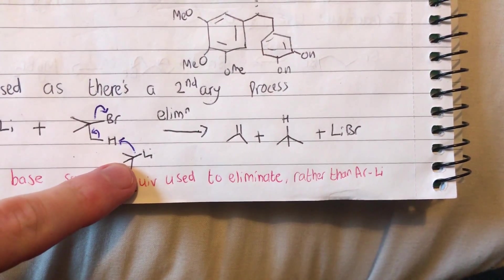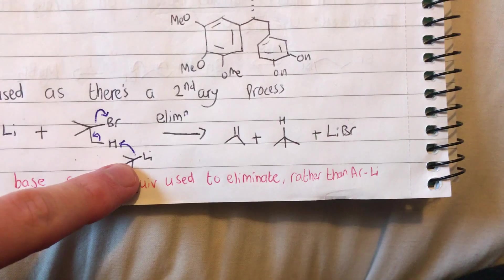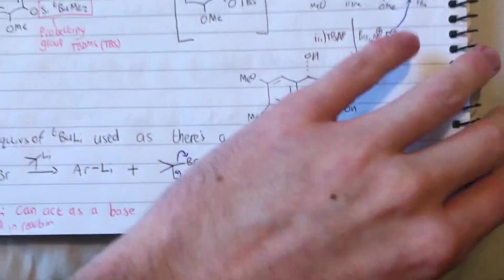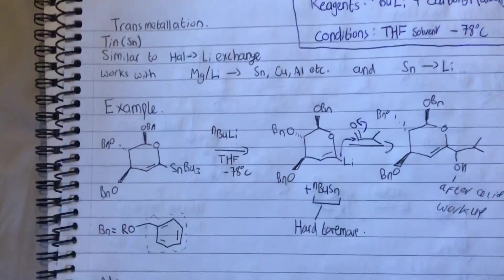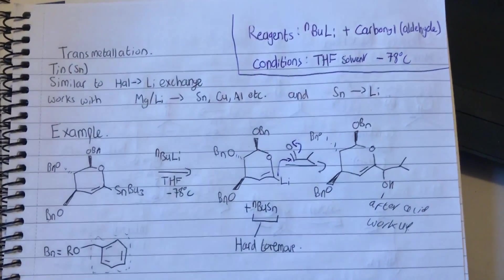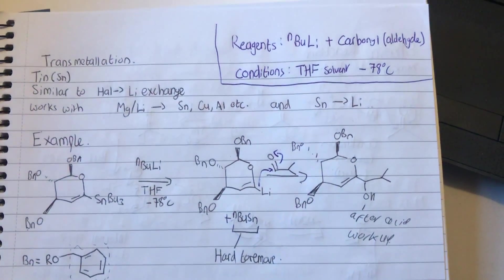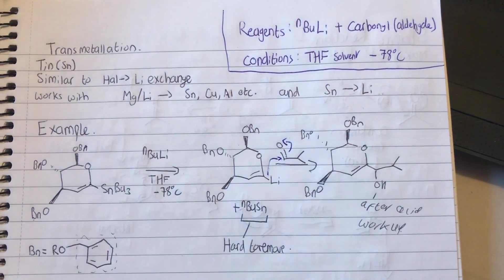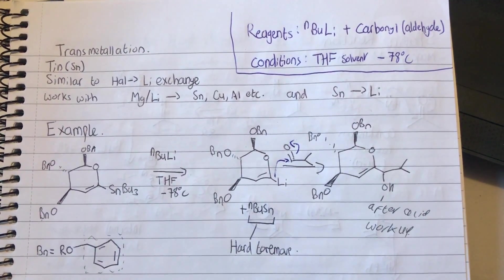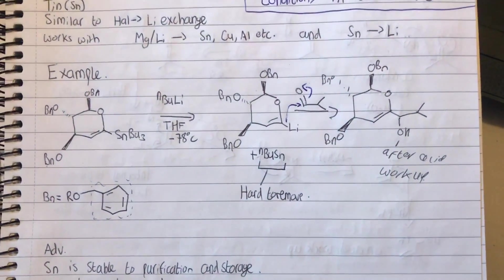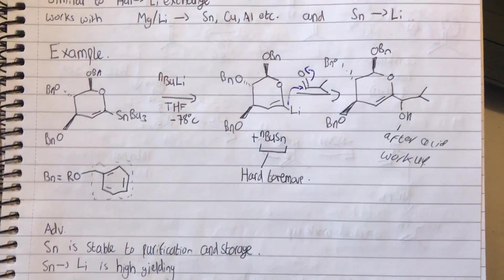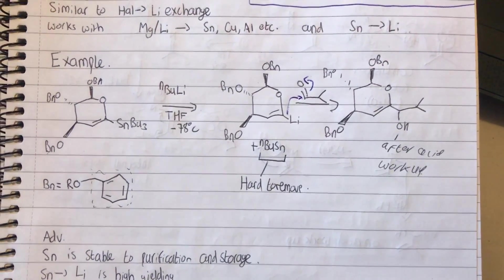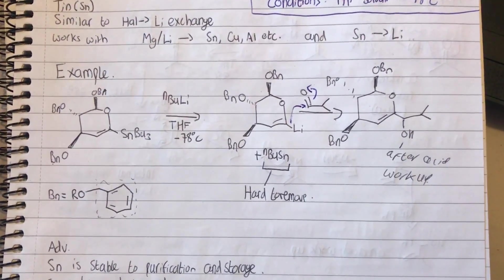Now we're going to go through transmetallation as well. Transmetallation is pretty much the same as doing a halogen-lithium exchange. The reagents are pretty similar—we're going to look out for a butyl lithium and a carbonyl. In this case we're using an aldehyde. This works by displacing either Mg or lithium with tin, copper, or aluminum. There's other options as well but we'll stick with those for now. In the case we're going to do for this example, we're displacing tin with lithium.